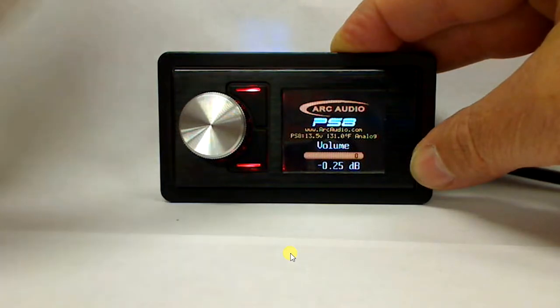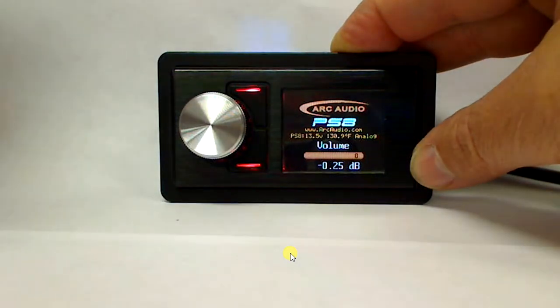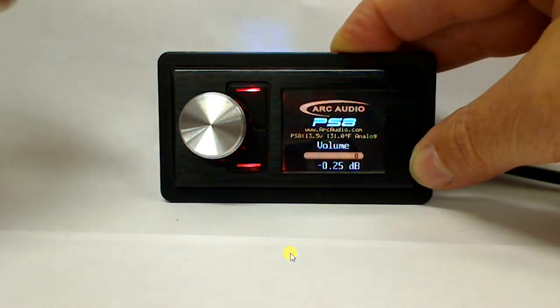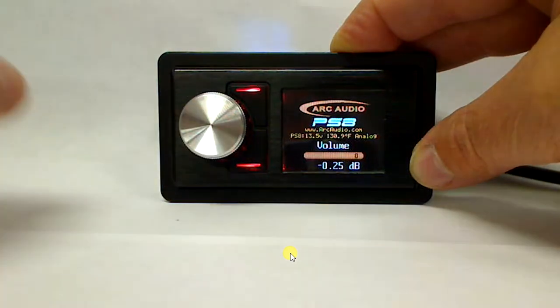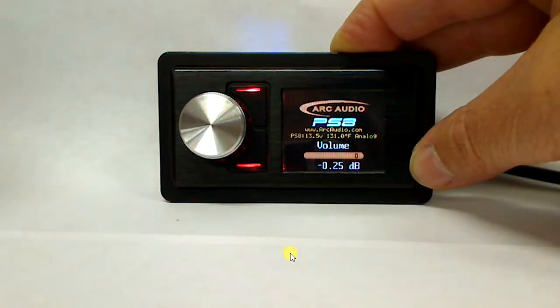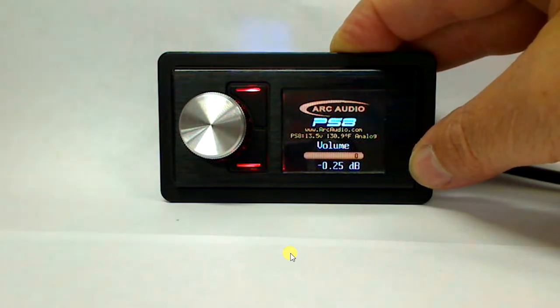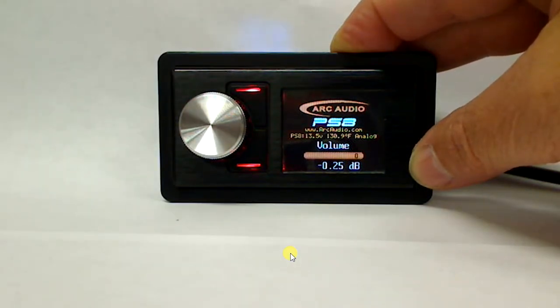Now one of the really cool functions about this is if you don't want to run a head unit and you want to have the controller run the entire system, like say if you're running the Bluetooth module at the PS8 and you want to use your phone on a boat or a UTV or something like that, you can come down here and push on the bottom function button. With the system turned off, as long as you have power and ground to it, you can hold that button for three seconds and it'll turn on and turn off your system just like if you're holding a source button on a radio.